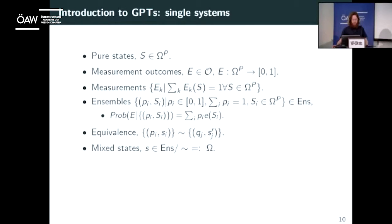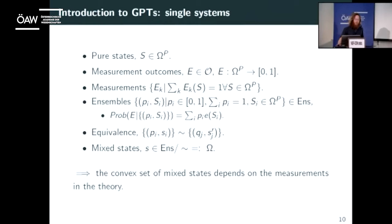We describe mixed states in this formalism by quotienting with respect to this equivalence relation. In quantum theory, the pure states are the rays in Hilbert space, ensembles are ensembles of rays, and the mixed states you get when you quotient are just the density matrices we're used to. So from this perspective, a density matrix really represents an equivalence class of ensembles that are indistinguishable by any measurements. The set of mixed states depends on the measurements we decide we can perform — if we change what measurements we can consider, we have to redo this analysis.